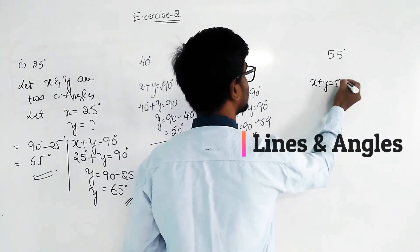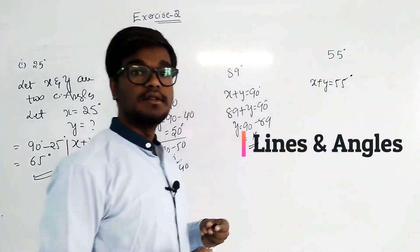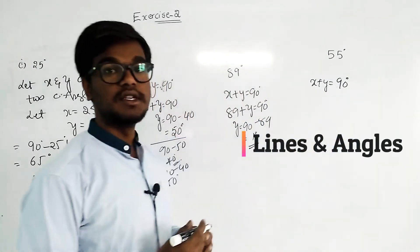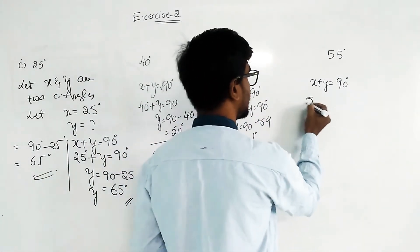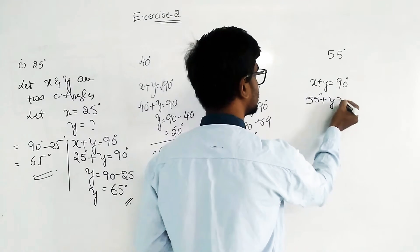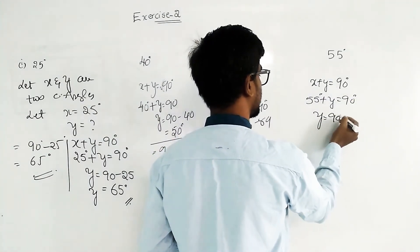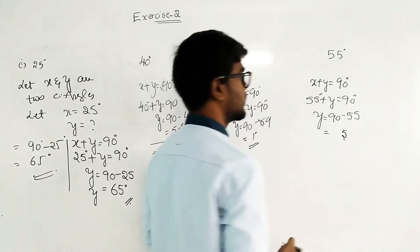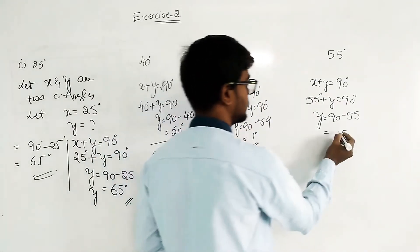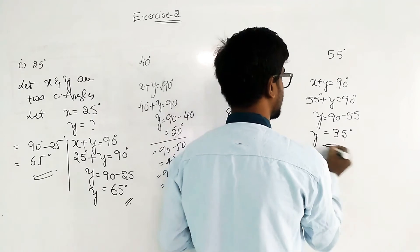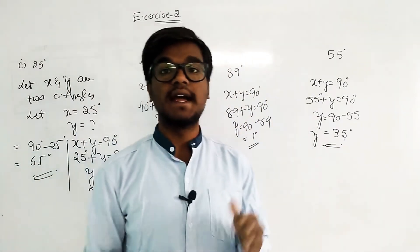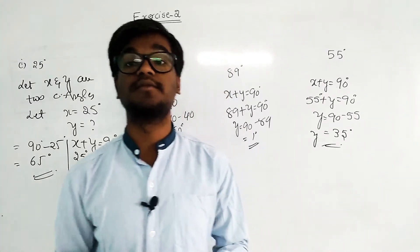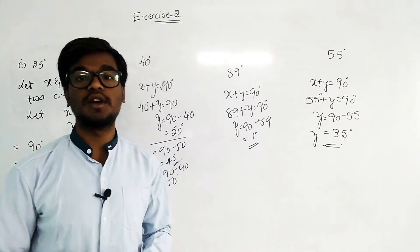For 55 degrees: x plus y equals 90 degrees. Here x equals 55, so y equals 90 minus 55, which equals 35 degrees. The complementary angle for 55 is 35 degrees, and the complementary angle for 35 is 55 degrees. Simply subtract from 90 to get the corresponding complementary angle for any given angle.